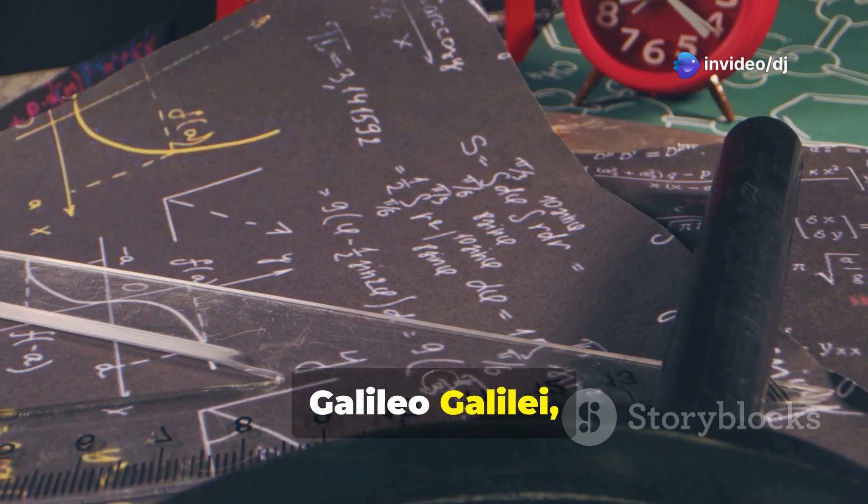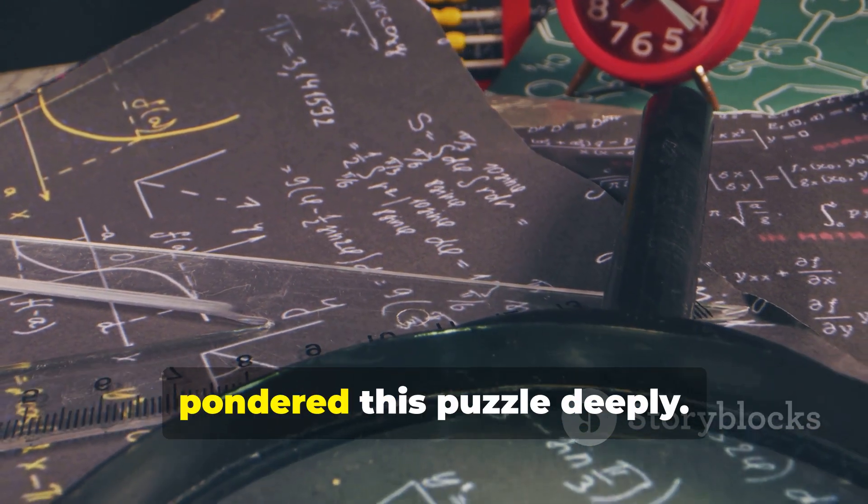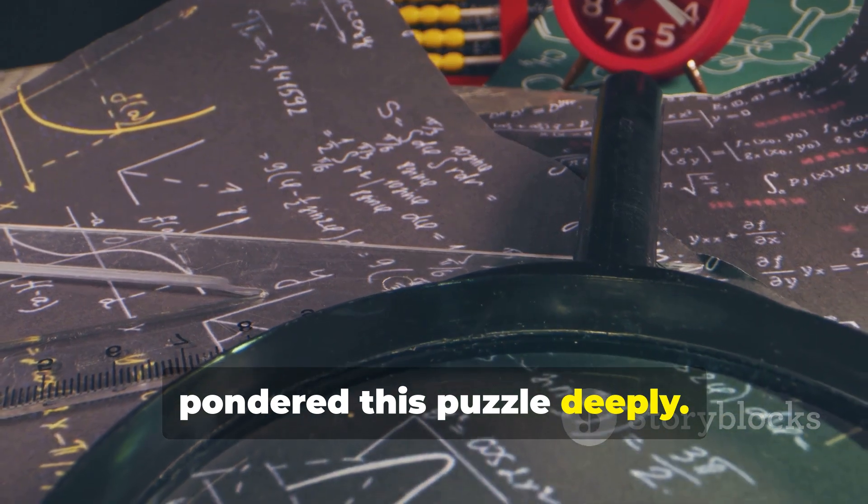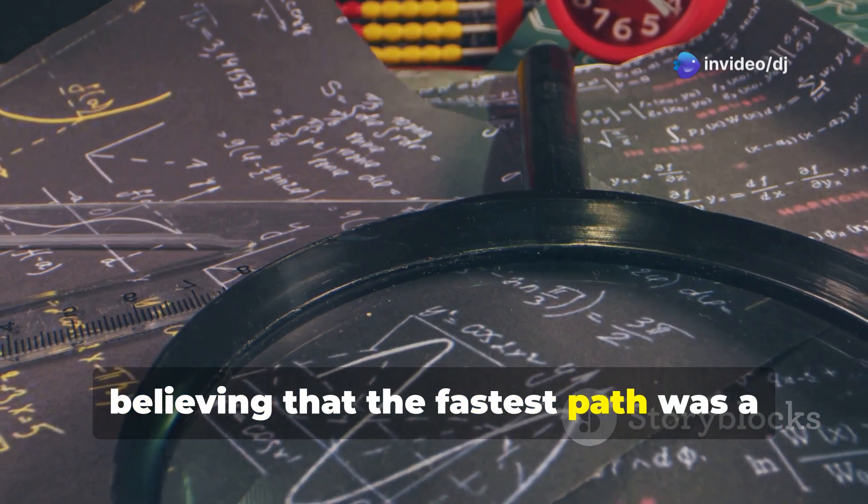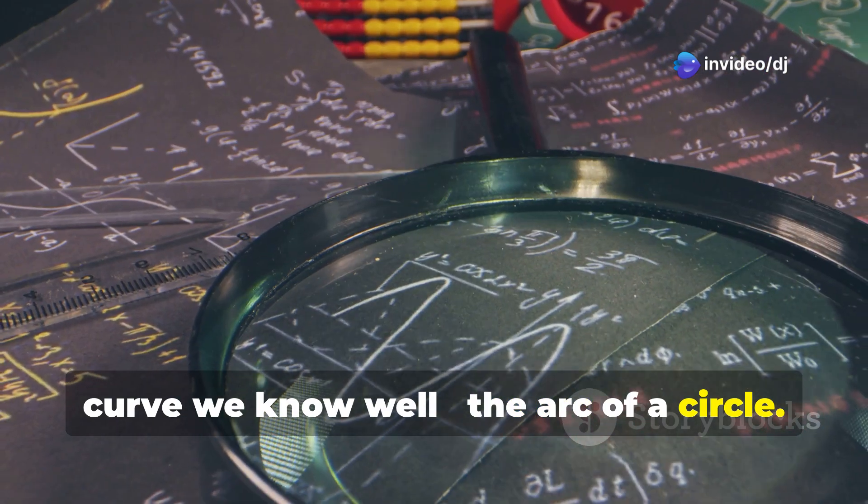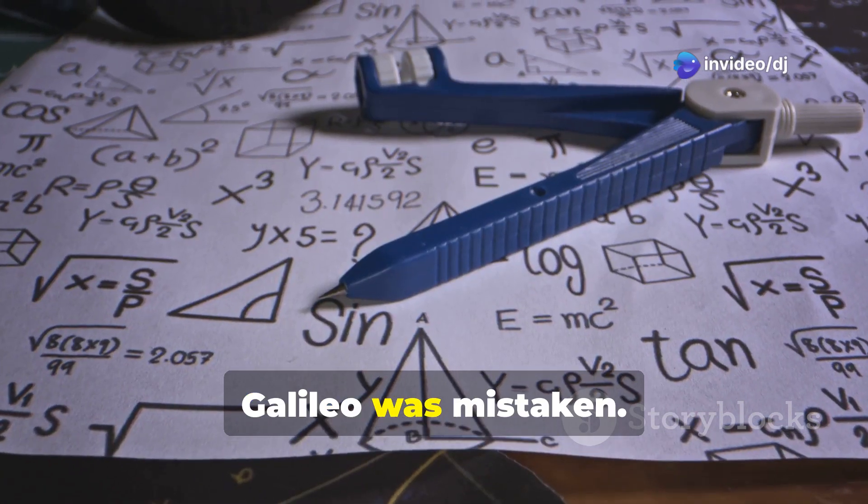Galileo Galilei, often hailed as the father of modern science, pondered this puzzle deeply. He was one of the first to attempt to solve it, believing that the fastest path was a curve we know well, the arc of a circle. However, Galileo was mistaken.